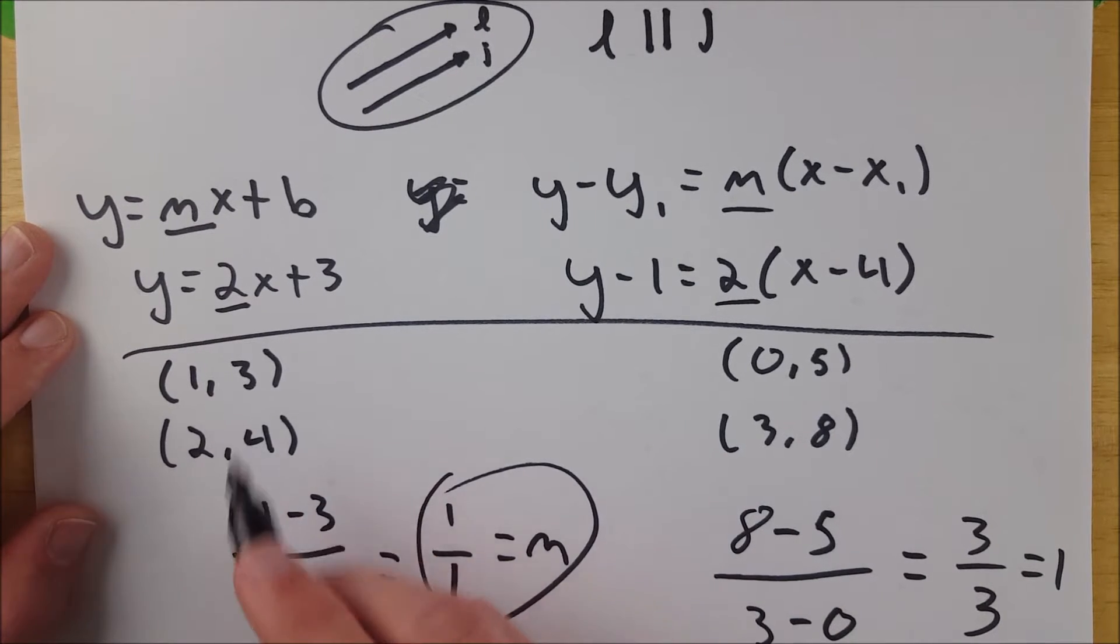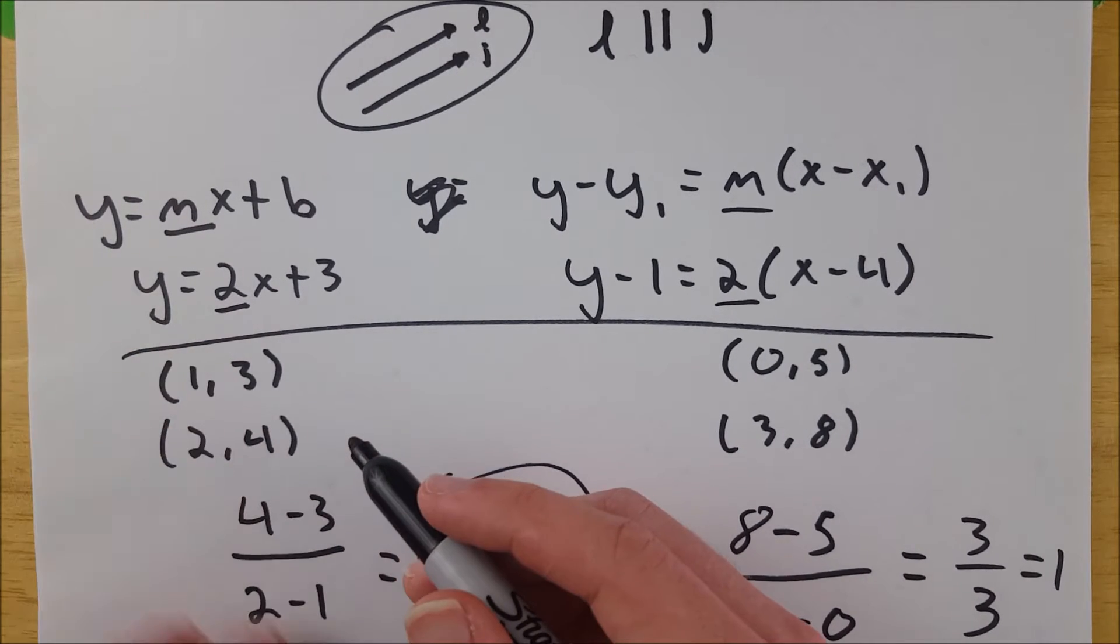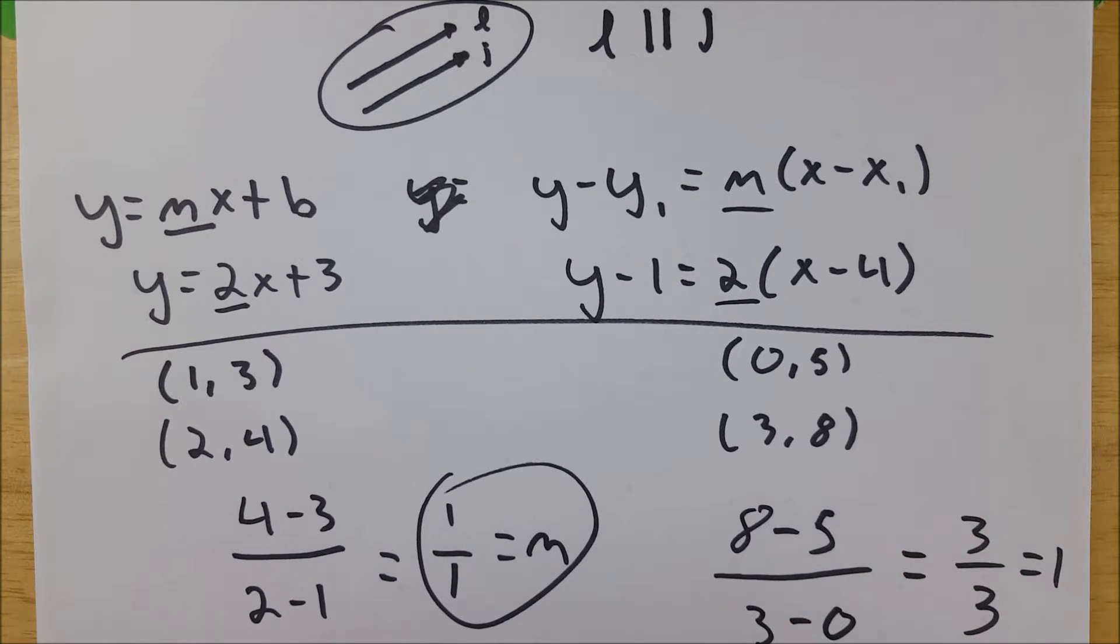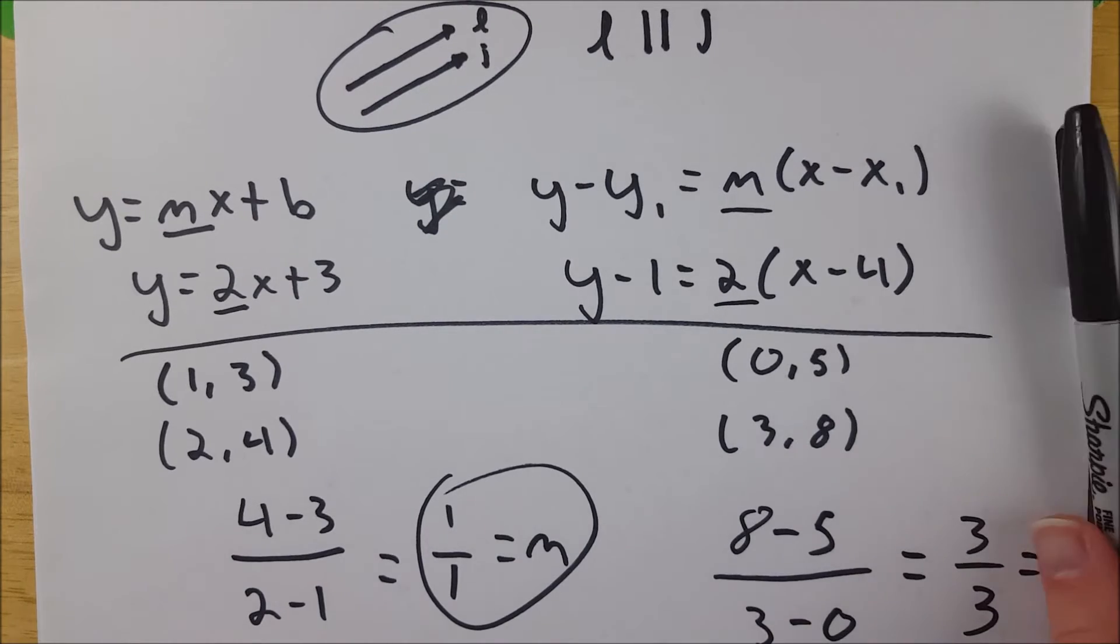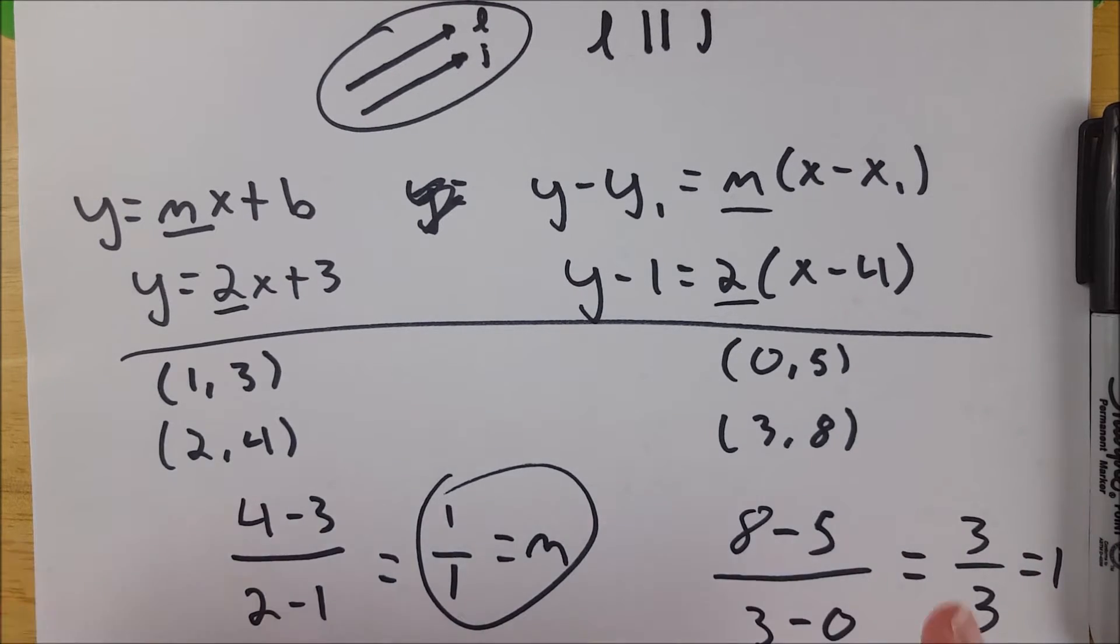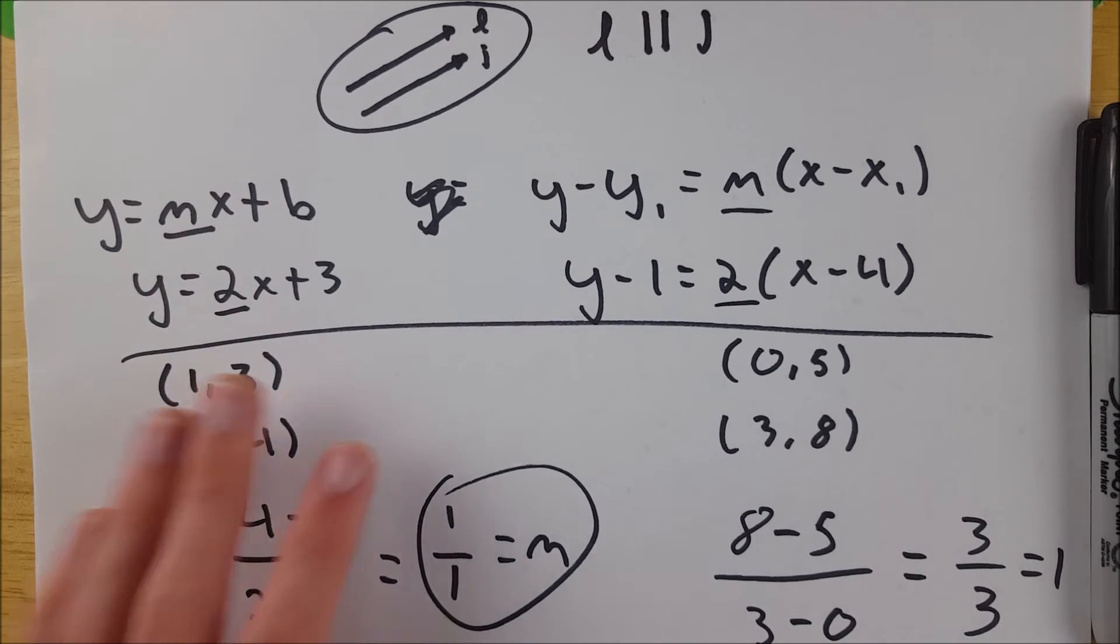And therefore this line, the line that is defined by these two points, is parallel to the line defined by these two points. So I hope this video helped you understand how you can determine if two lines are parallel using two or three different strategies, depending on how you look at it. They're all pretty easy, I think.